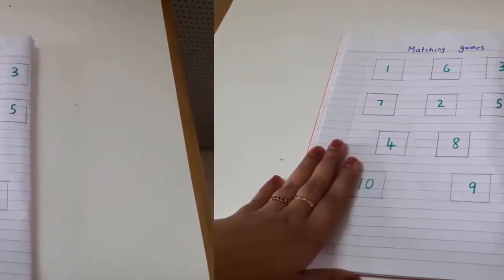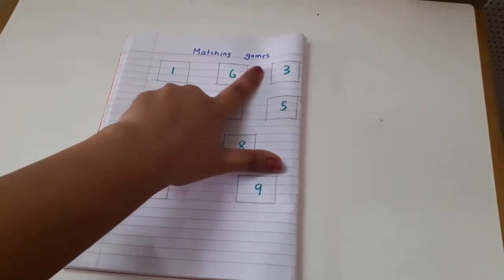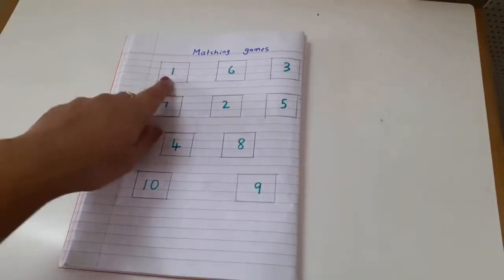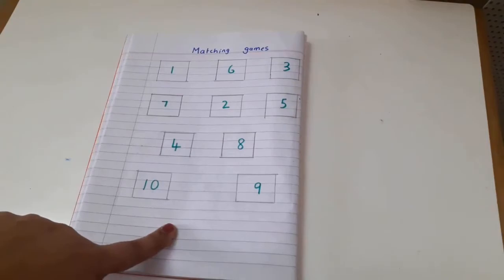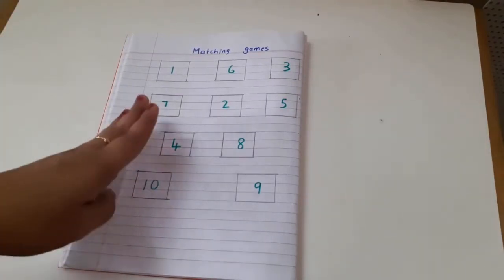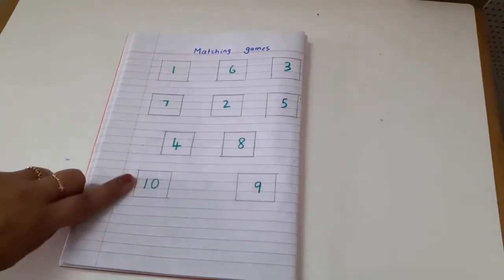The first activity or game is a matching game where I have taken numbers from 1 to 10 and I have written them in these small little boxes. If your kid is able to count beyond 10, you can take that number too, but here I have taken from 1 to 10.